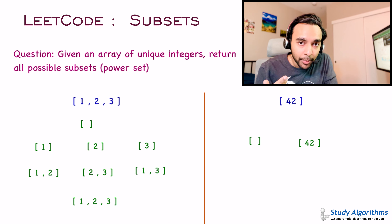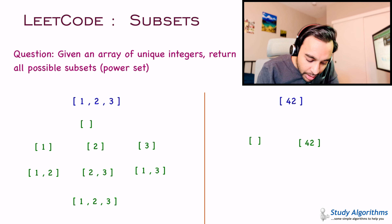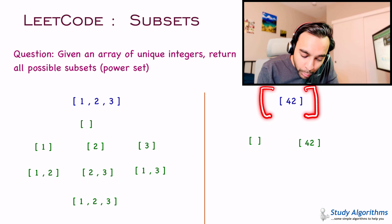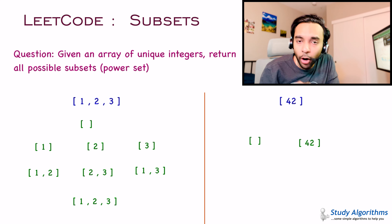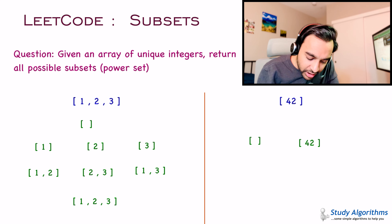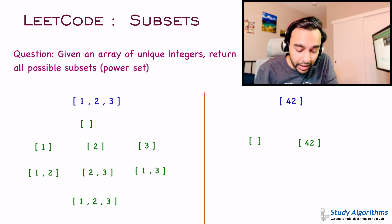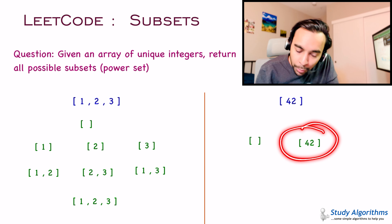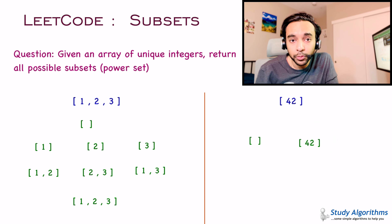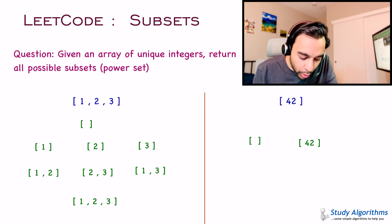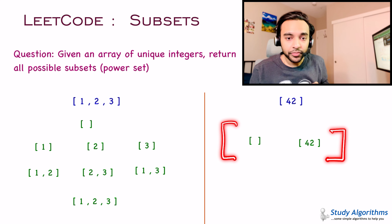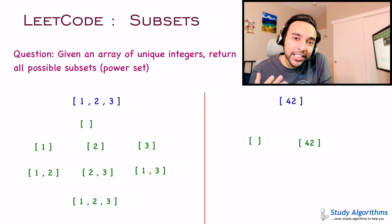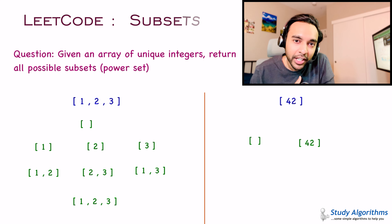Let's take one more test case. You have an array with only one element, 42. How many subsets can you make? The first subset would be an empty set — you are not picking any element. And in the second subset, you pick the only element available. So for this array, you can only have two subsets in the power set. Now if you have understood the problem statement, feel free to try it out on your own. Otherwise, let us see how we can go about solving it.